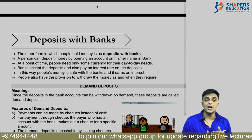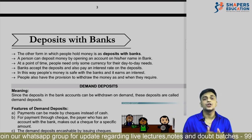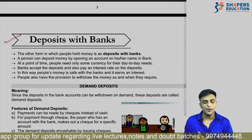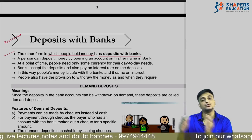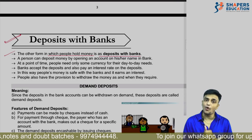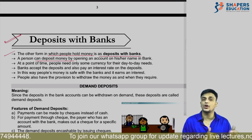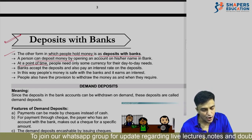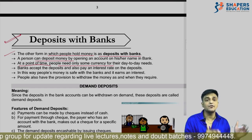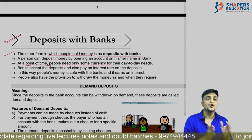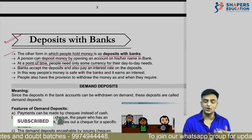Alongside currency, another form of money is deposits with banks. Whatever surplus amount we have as savings, we can deposit it in a bank. The other form in which people hold money is as deposits with the bank. A person must open an account in their name to deposit money. At any point, people only need some currency for daily transactions; the surplus savings can be deposited in a bank.